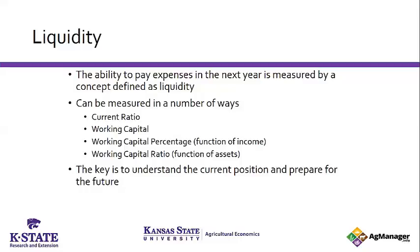One ratio is a function of income, one is a function of assets. They all tell you roughly the same type of thing but look at it a little differently. As you think about your own farm operation, it's really important to think about where you are, and then begin to look at where you might be in two or three years under the current situation, because if you know you're going to have a situation to deal with, it gives you more time to plan and make better decisions.